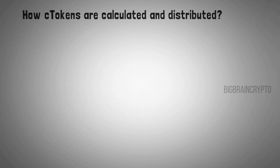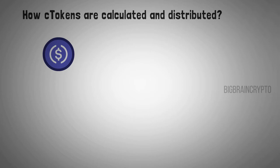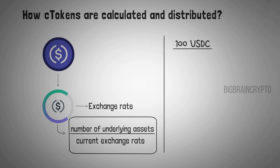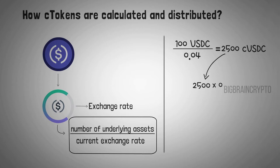How are C-Tokens calculated and distributed? They are issued corresponding to the type of asset deposited. For example, if you lend USDC, you are provided with a C-USDC token, and the amount of C-Token is calculated per the exchange rate. The user receives C-Tokens based on the number of underlying assets they supply divided by the current exchange rate. If you deposit 100 USDC and the exchange rate is 0.04, then you receive 2,500 C-USDC. When you return the C-Token and the exchange rate is now 0.05, you get back 125 USDC.